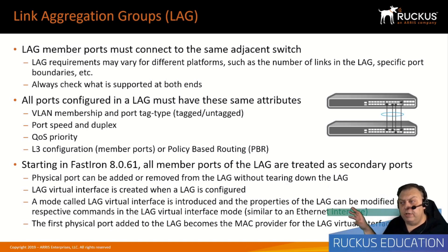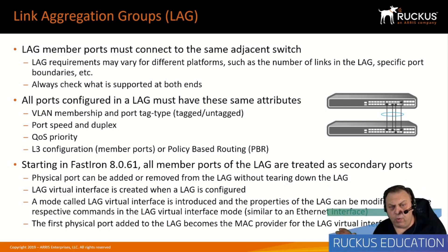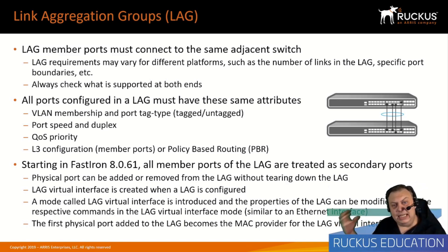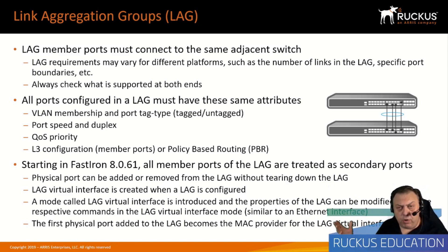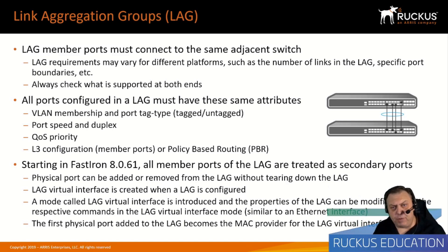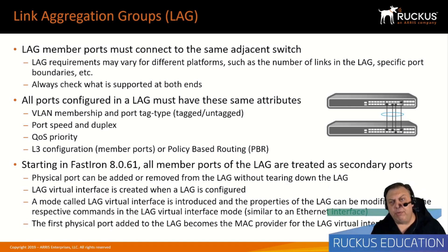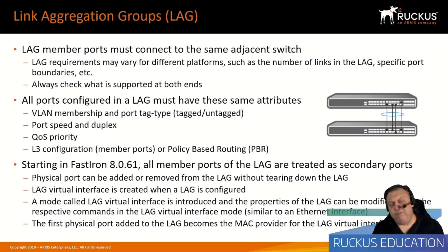In modern versions of the operating system — firmware 8.0.61 and later — you no longer need to define a primary port or manually deploy the LAG. It's deployed automatically when you add member ports into the aggregation group, creating a logical lag interface. For example, you'd create 'interface lag 5,' and all configuration is applied at that lag 5 prompt. To add it to VLAN 22, go to VLAN 22 and say 'tag lag 5' to have that logical interface participate in the VLAN.